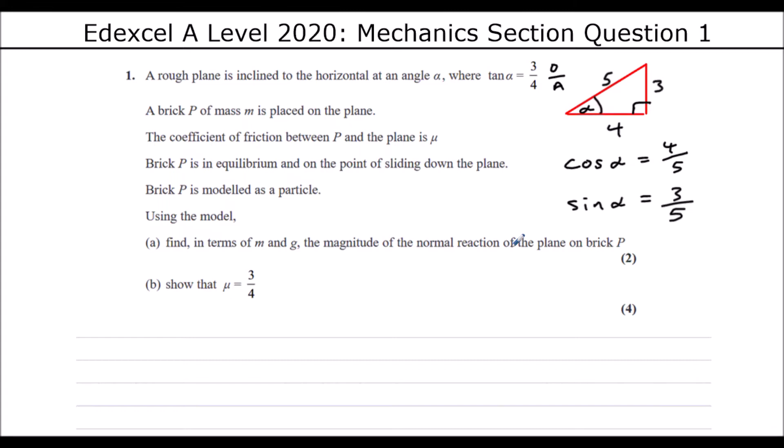A brick P of mass m is placed on the plane. The coefficient of friction between P and the plane is mu. Brick P is in equilibrium. So the forces, there's no acceleration. Forces left equal forces right. Forces up equal forces down. And on the point of sliding down the plane. So that means friction takes its maximum value, which is mu r. Brick P is modeled as a particle. Using the model, find in terms of m and g, the magnitude of the normal reaction of the plane on brick P.